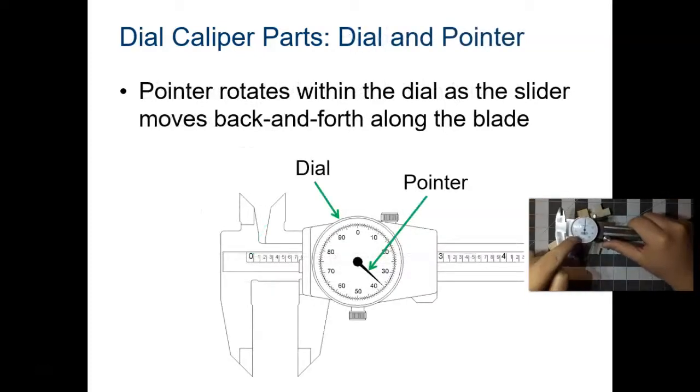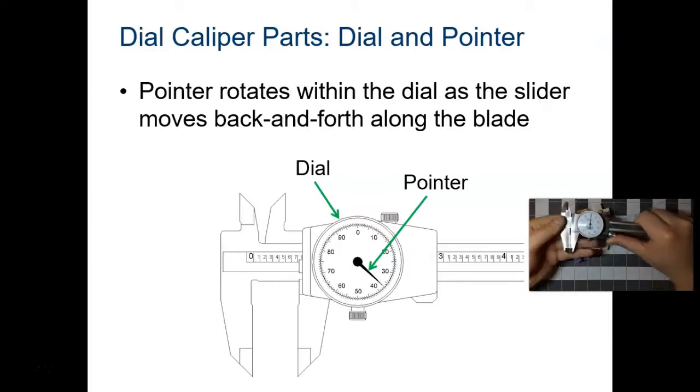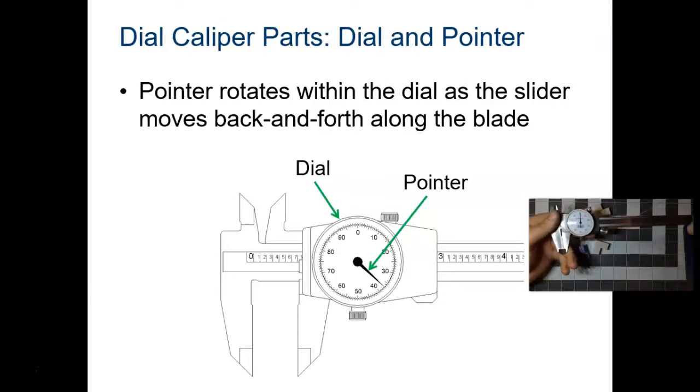This is the dial, and on the dial is the black pointer. The long end is your reading. So the pointy part, the long end, that's your reading. The pointer rotates within the dial as the slider moves back and forth along the blade.